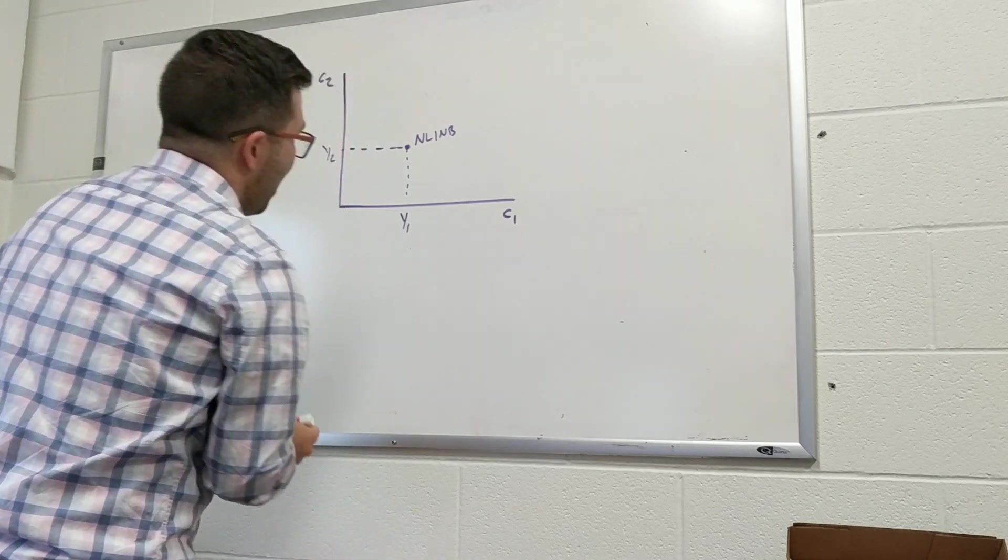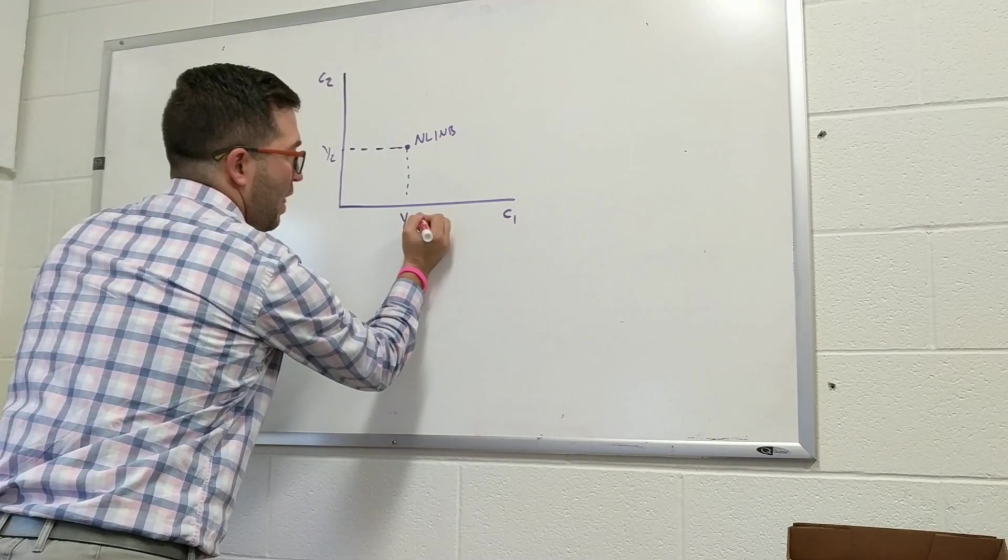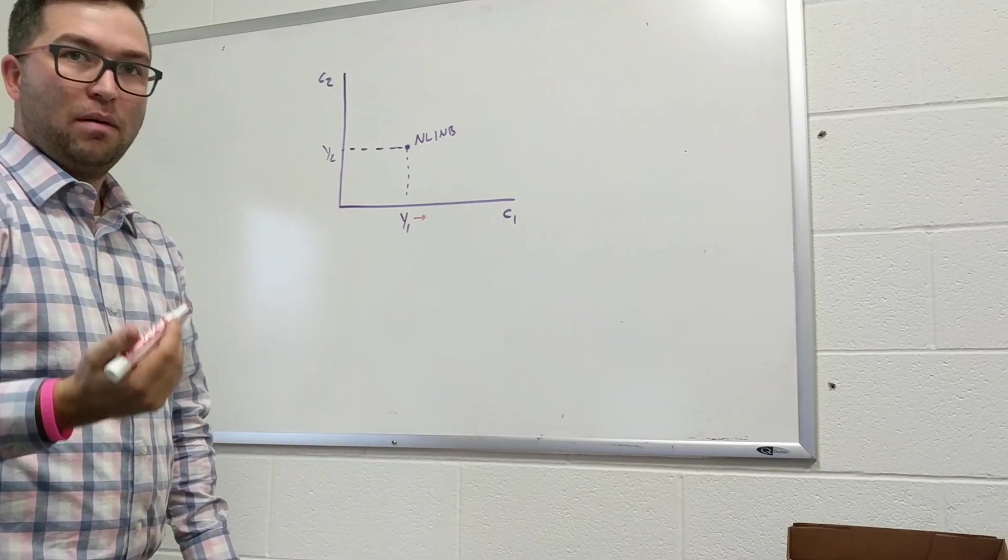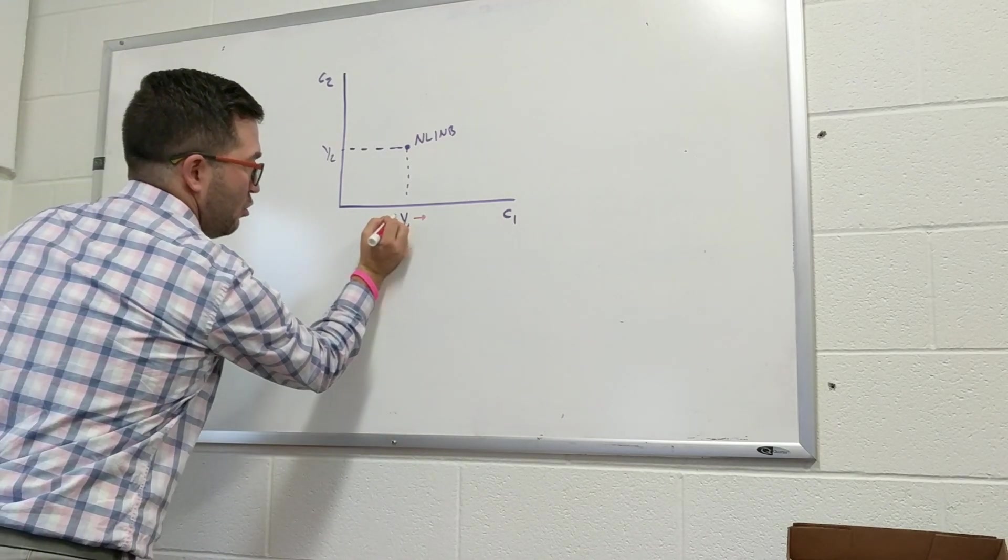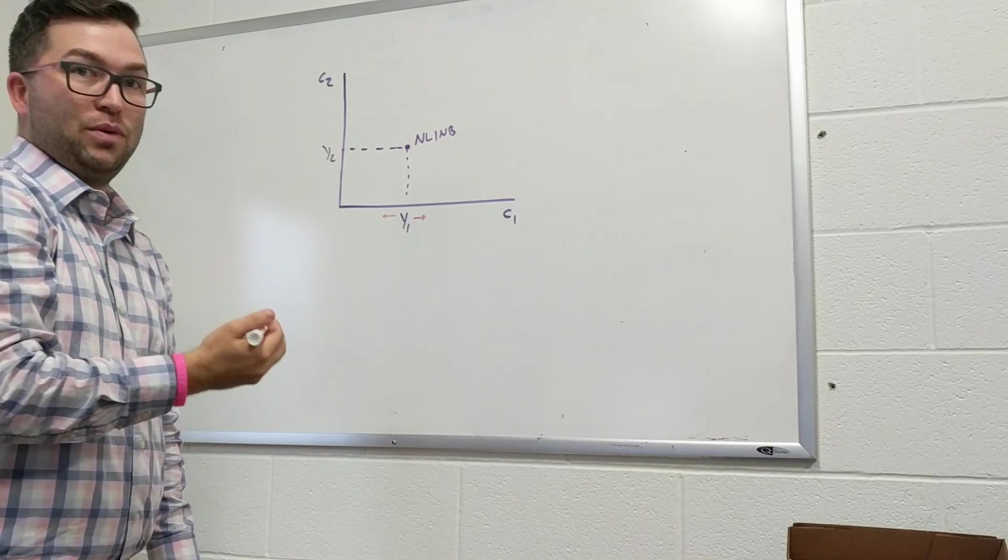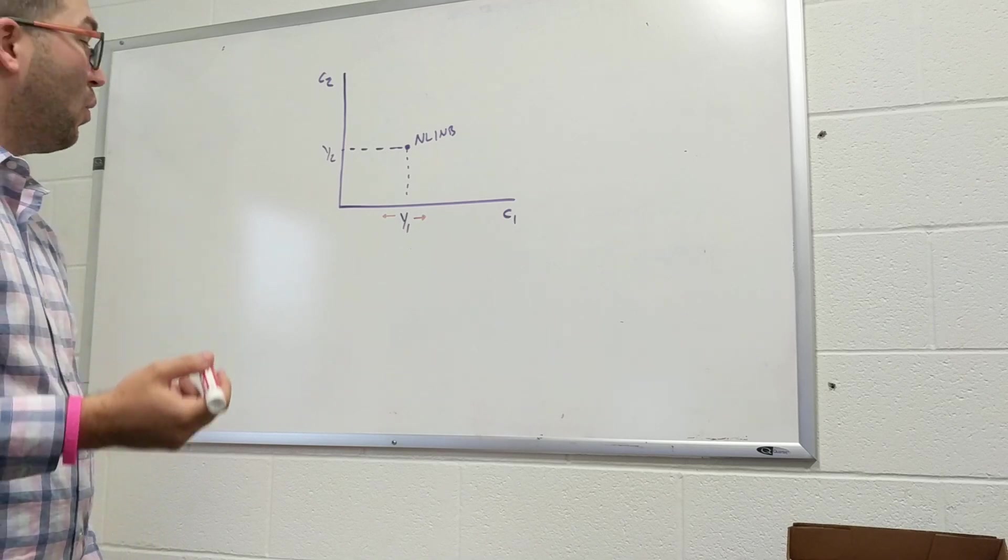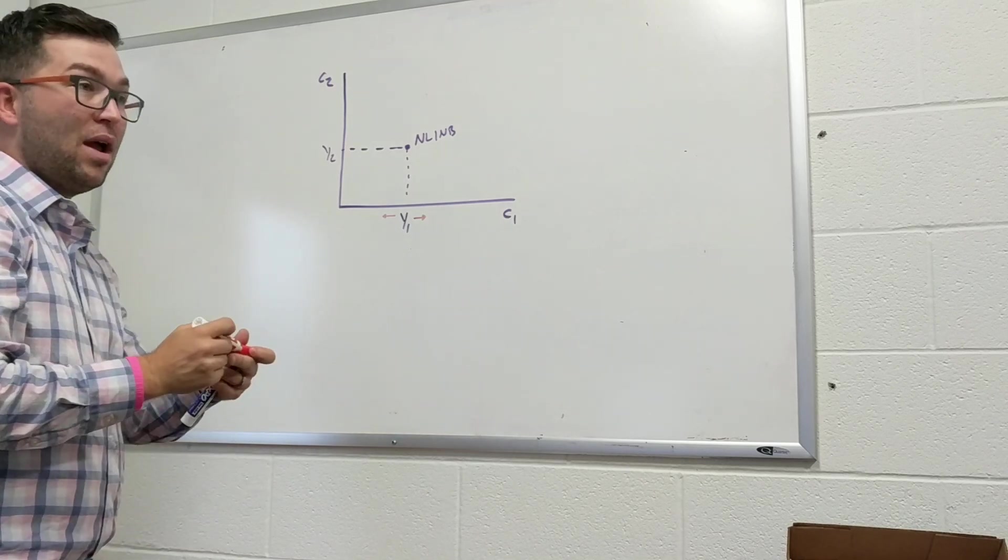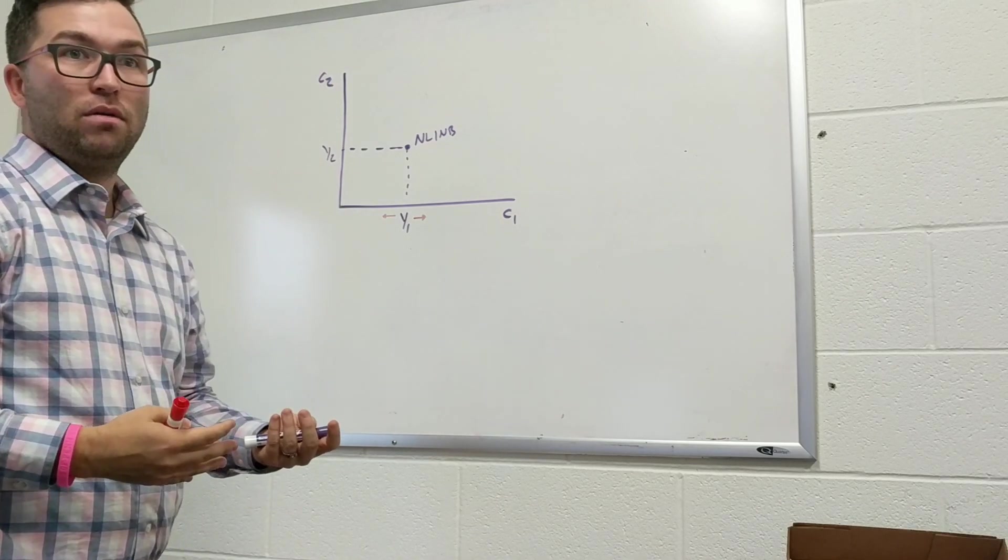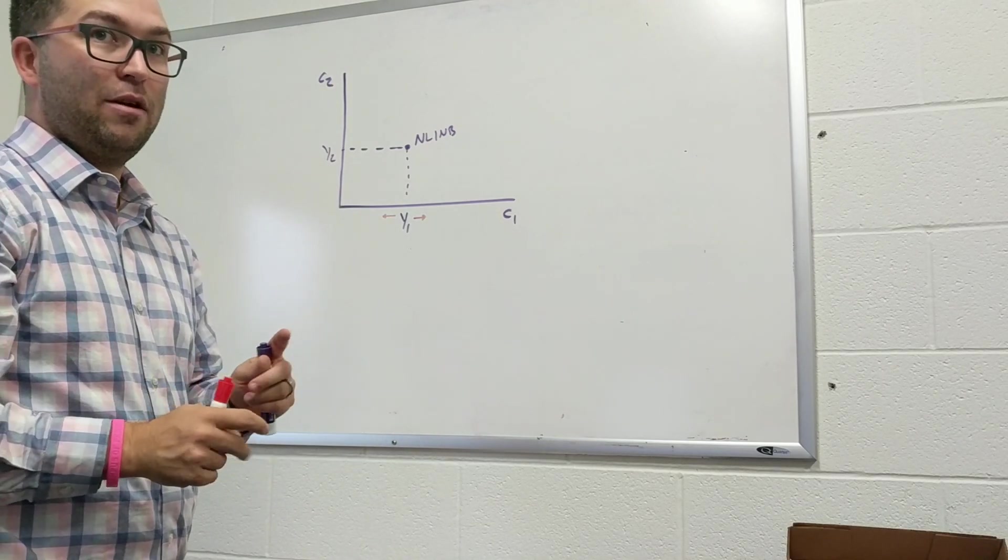So if I want to consume more than my current income, I have to be able to borrow. If I want to consume less than my current income, that means that I'm going to be able to save. In this question, it just says that Ray does not have the ability to borrow. That's the idea. Ray doesn't have the ability to borrow.